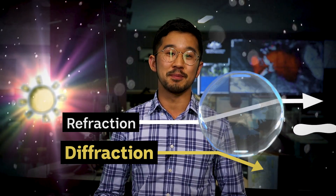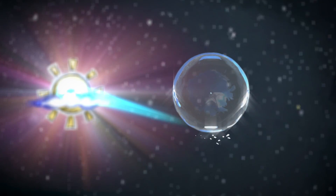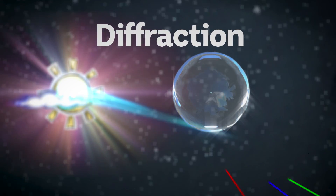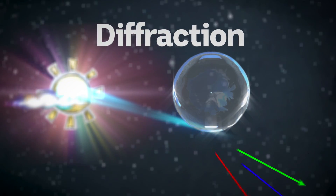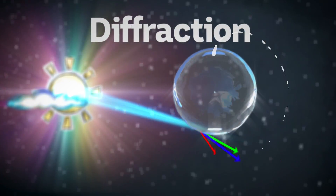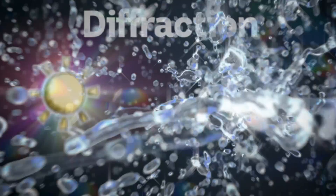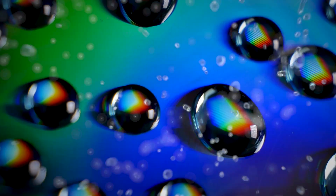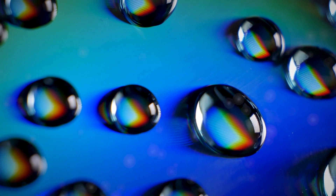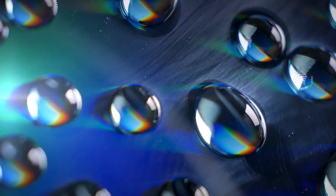Rainbows are created by a process called refraction, but iridescence is caused by diffraction. When light diffracts, it gets bent around very small objects. The light bends or diffracts slightly on the outside of things like water droplets and ice particles in a cloud. Diffraction scatters light waves into a ring-like pattern of colours around the droplets.